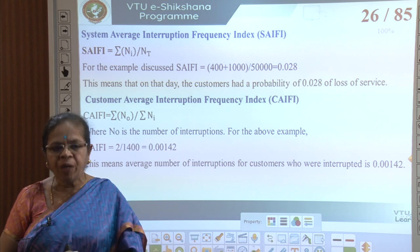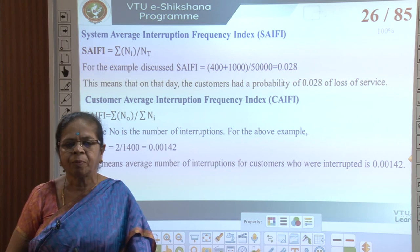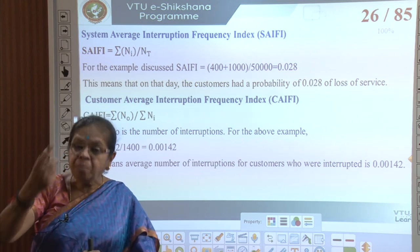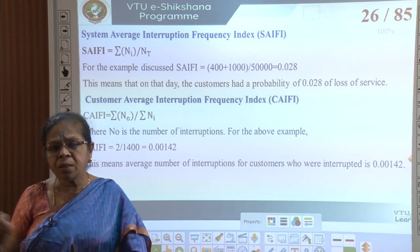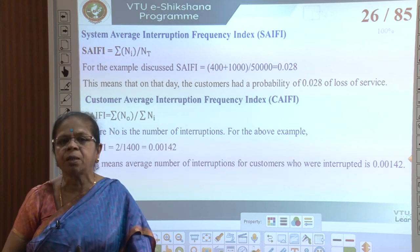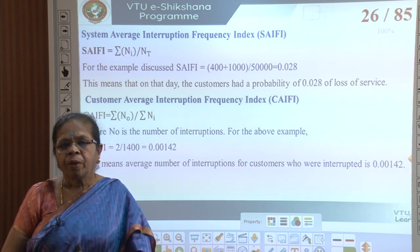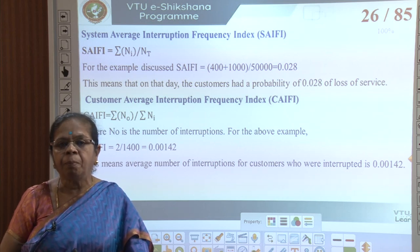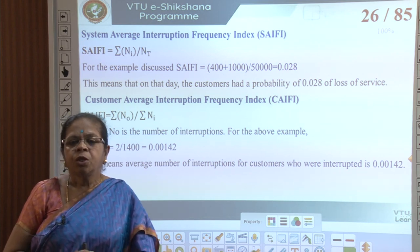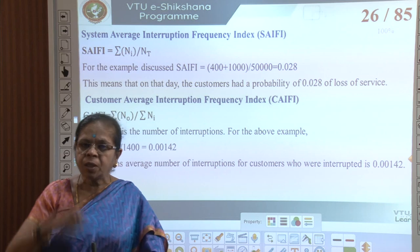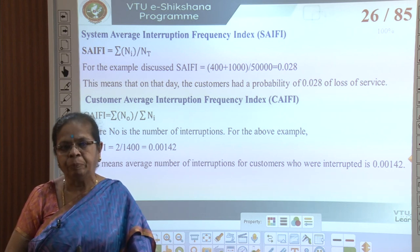The other index is CAIFI — Customer Average Interruption Frequency Index — which tells you how many times there was an interruption. N0 is the number of interruptions; this does not consider how many customers were affected, just how many interruptions occurred. There were 2 interruptions affecting totally 1400 customers, so that gives you 0.00142. This means the average number of interruptions per customer who was affected is 0.00142 in a day.